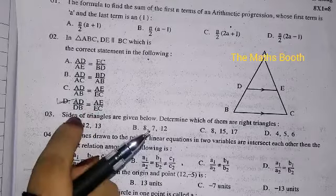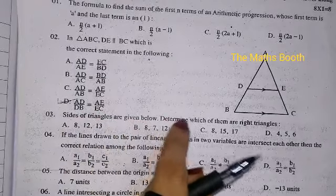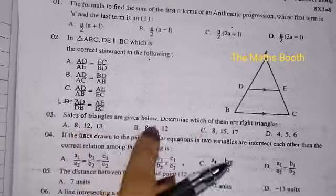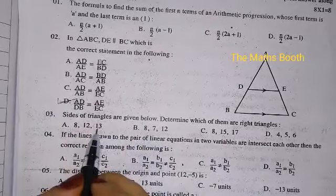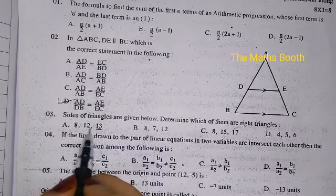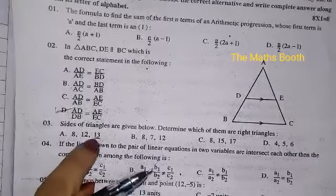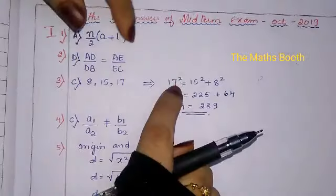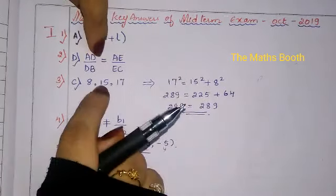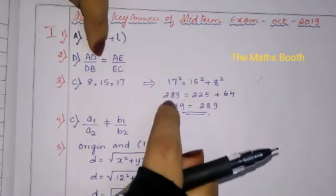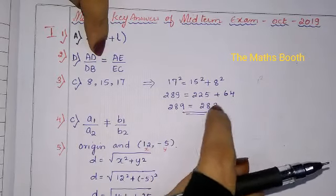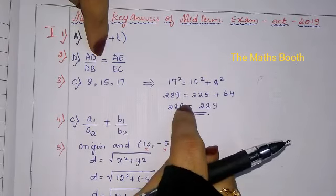Next question: sides of the triangles are given; determine which of them are right angle triangles — these are Pythagorean triplets. The correct option is 8, 15, and 17. The bigger number is 17. 17² = 289, 15² = 225, 8² = 64, and 225 + 64 = 289. Both LHS and RHS are equal, so this is a right angle triangle.